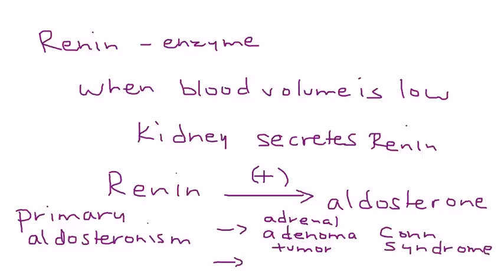The next reason why you can have primary aldosteronism is if you have adrenal hyperplasia. And the reason there's a distinction that I wanted to illustrate is because the treatment is slightly different for tumors versus hyperplasia. Tumors are treated surgically, and hyperplasia is treated with medication.